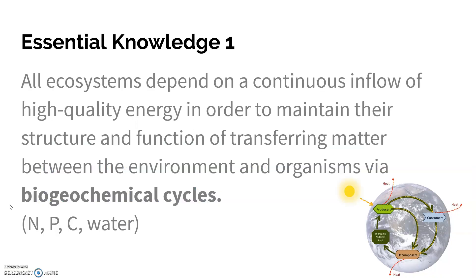Trophic levels is just a fancy word for steps in the food chain. All ecosystems depend on this continuous inflow of energy in order to maintain their structure and function, transferring matter between the environment and organisms via the bio-geochemical cycles. The ones you want to know: nitrogen, phosphorus, carbon, and water.